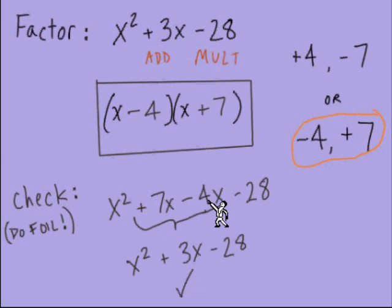We'll see those two like terms in the middle. Combine those like terms, and positive 7 with negative 4 is that positive 3x. So we come up with that trinomial we started with, and that is the way to check that this is exactly how it should be written in factored form.